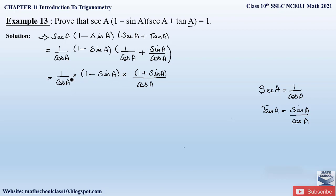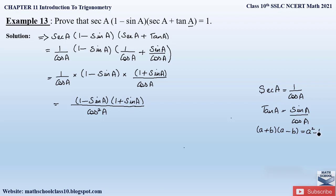We now multiply the two terms together. In the denominator we have cos A into cos A, which gives cos squared A. In the numerator we have (1 minus sin A) into (1 plus sin A). This is of the form (a minus b)(a plus b), which equals a squared minus b squared — an identity from our previous classes. Here a is 1 and b is sin A.